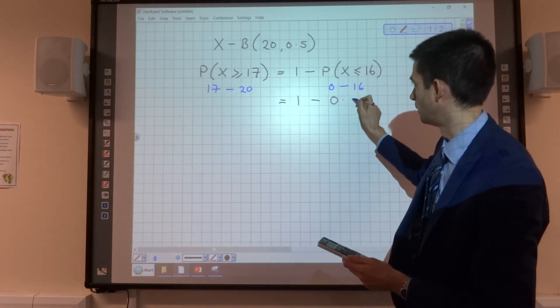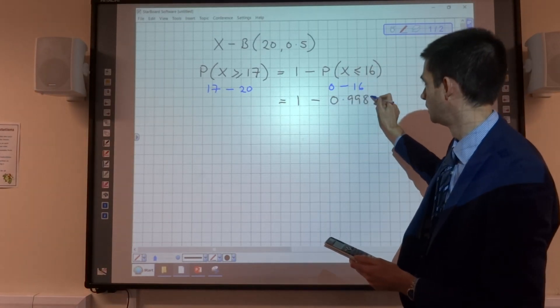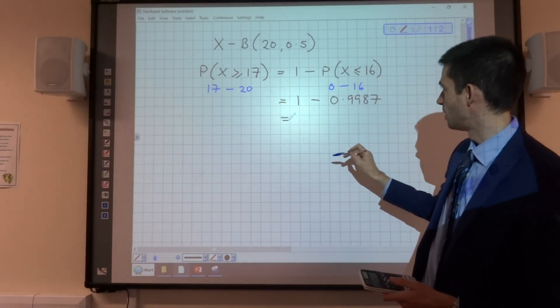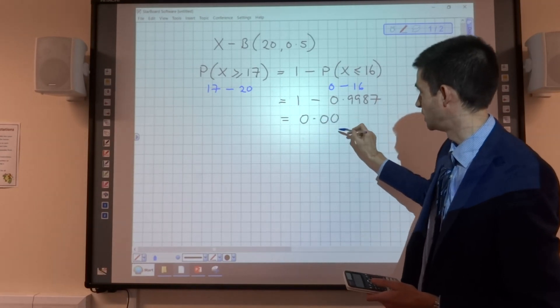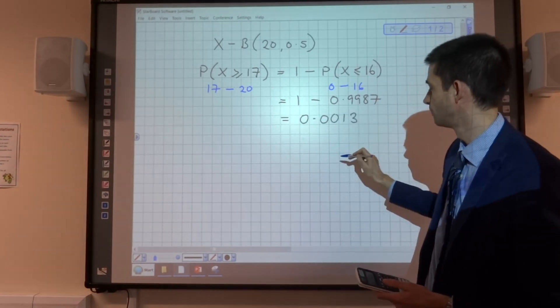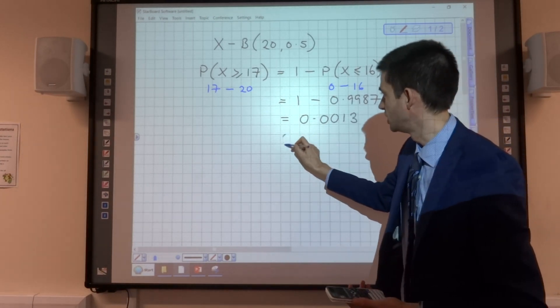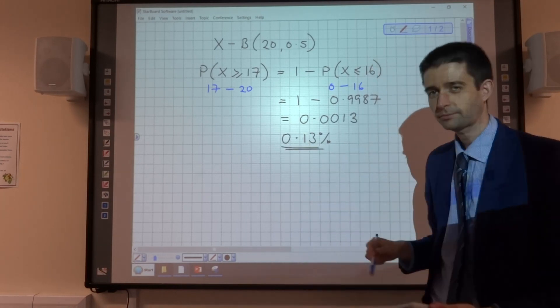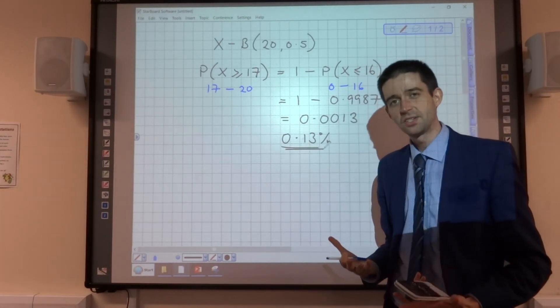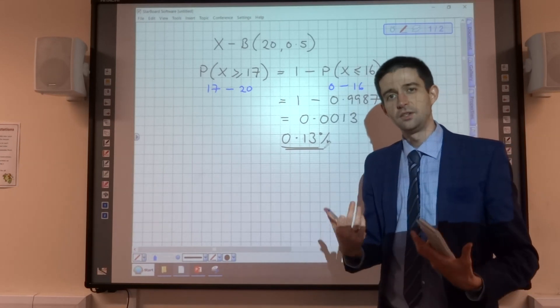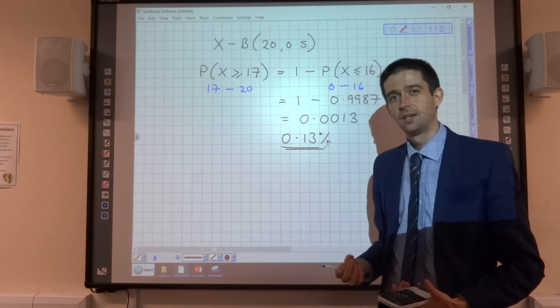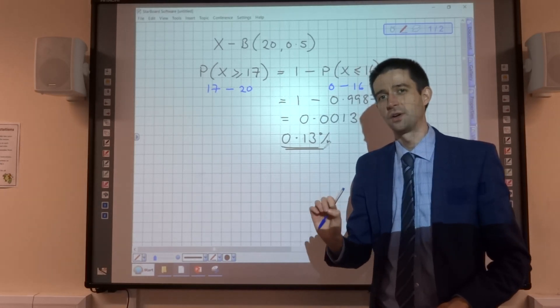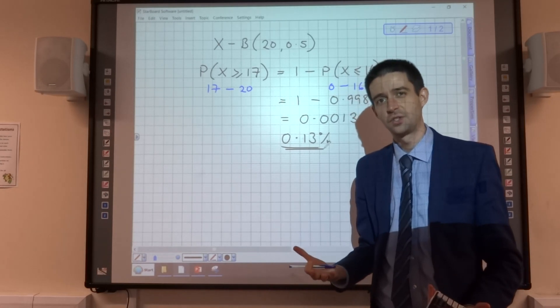It gives me the probability 0.9987. So when I do 1 minus that, I get 0.0013 to 4 decimal places, which is 0.13%. So the probability of me getting 17 or more heads out of 20 is 0.13%. That is a probability that's so small that you might have reason to suggest that I've cheated. And that essentially is the nature of a hypothesis test.